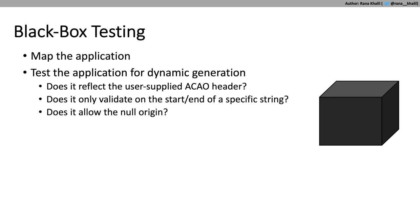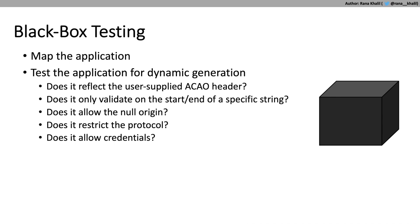For applications that use regex-based origin validation, try to figure out what the regex is and whether it's exploitable. For apps that validate only the start of a string, try appending your own domain after the expected prefix. For apps that validate only the end of a string, try adding characters to the beginning. Also test for null origin: add 'null' to the Origin header and see if the application accepts it. Check whether the protocol is restricted — try the same domain with http instead of https. And importantly, check if the Access-Control-Allow-Credentials header is set to true, as that significantly increases the severity of the vulnerability.